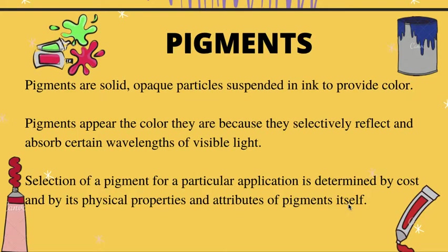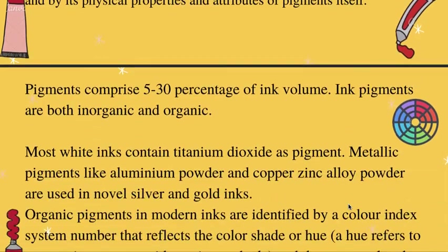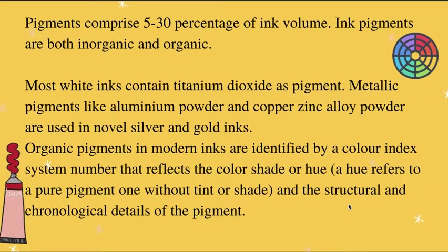Pigments are basically solid opaque particles that are suspended in the ink to provide color. The color should be opaque so it doesn't mix with the paper and become transparent — only then will it be visible. Pigments appear the color they are because they reflect and absorb certain wavelengths of visible light. Pigments also constitute 50 to 30 percent of ink volume.